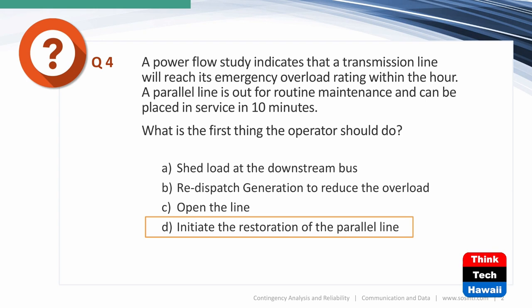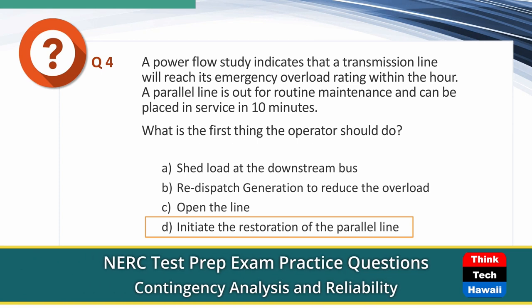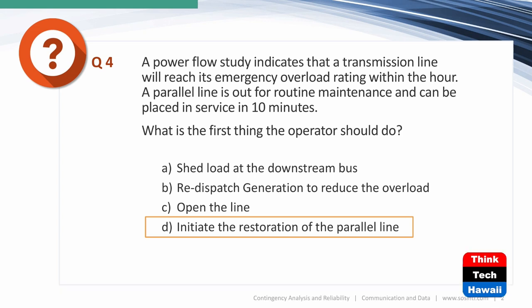Shedding load at the downstream bus would certainly get rid of the overload, but shedding load is always the last resort. You shed load if you had to — usually if you're already in an overloaded state or if continued analysis tells you the line will cascade into a blackout. But right now you're not even overloaded, not until an hour from now — so A is not the answer.